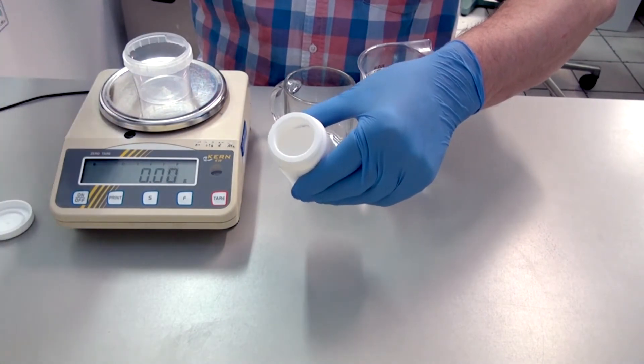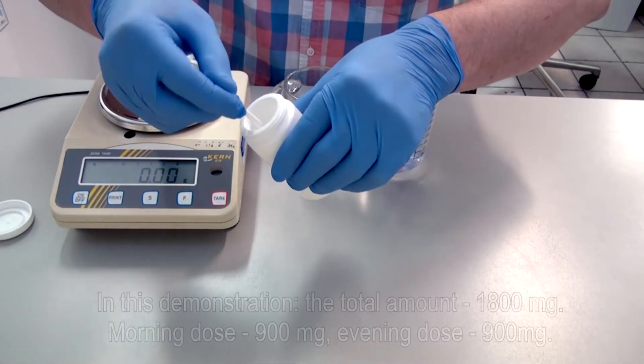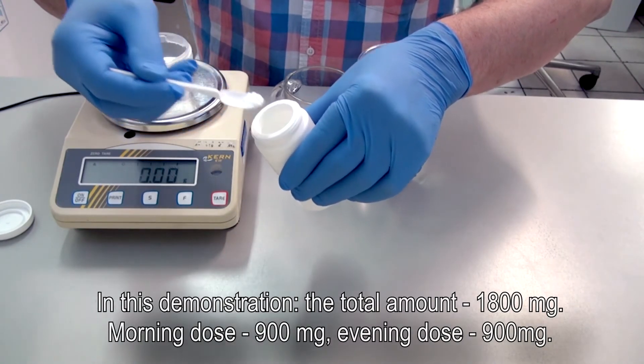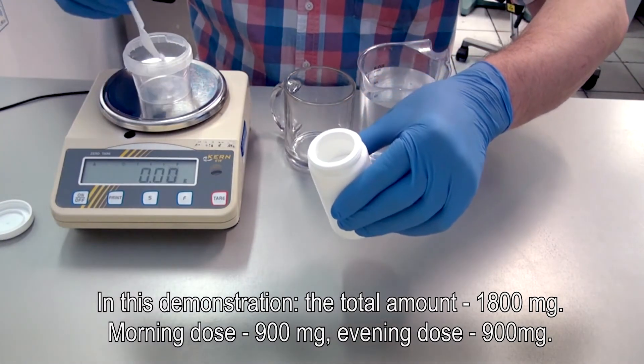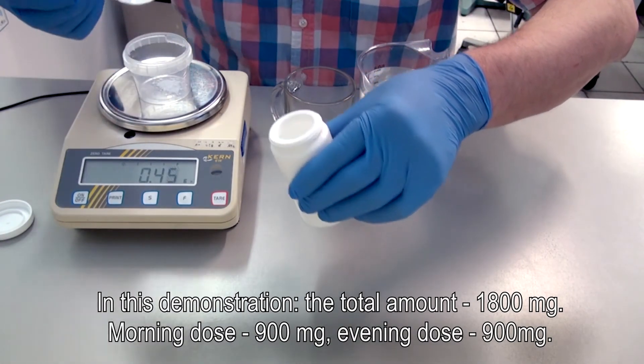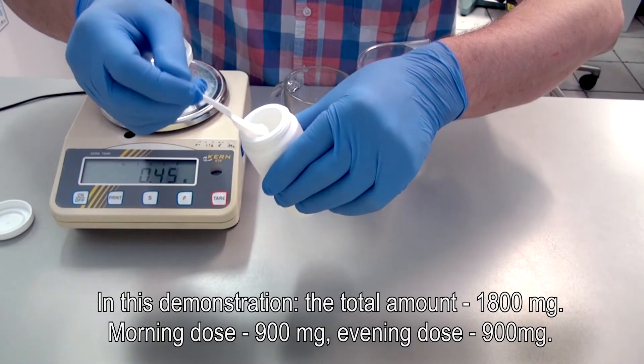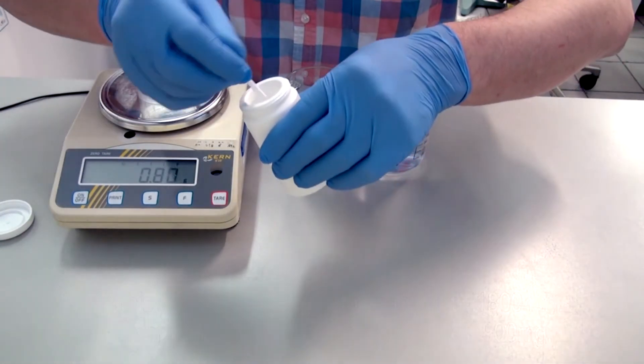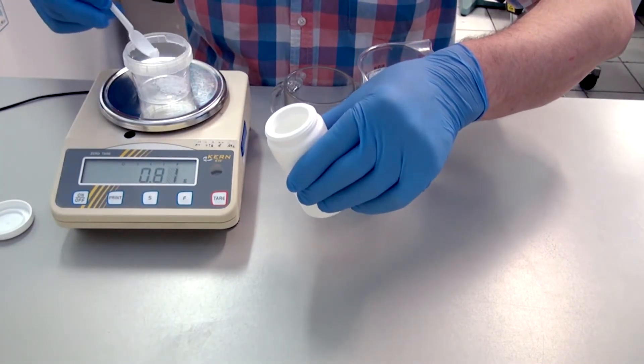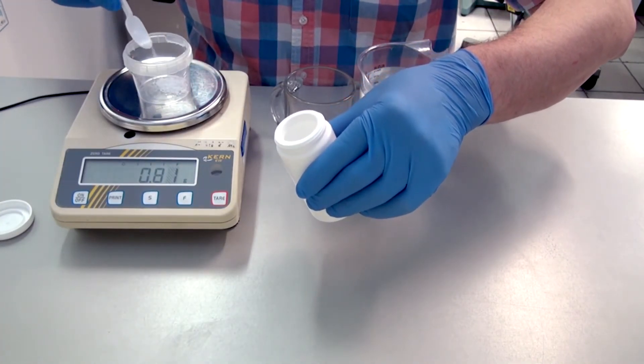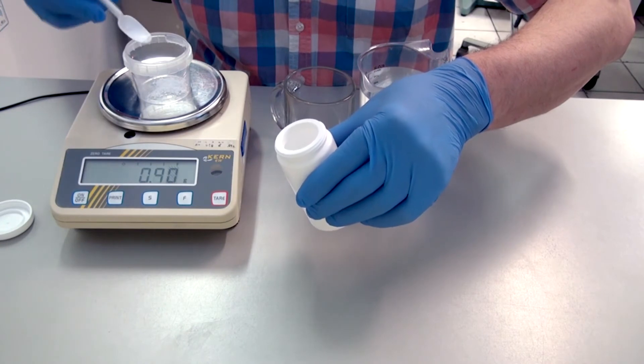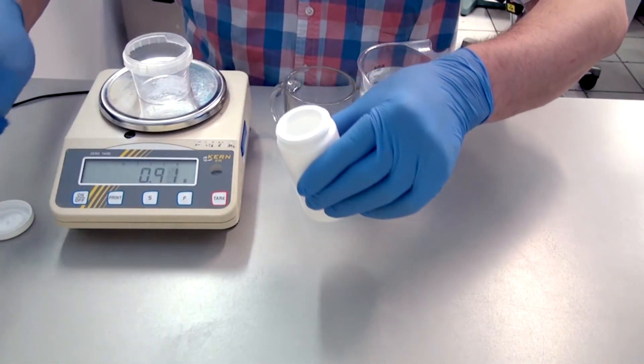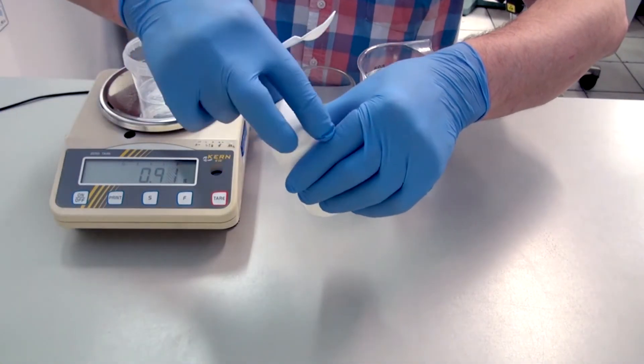Just open the bottle and use the teaspoon to carefully pick the desired dose. We will be making a morning or evening dose for someone who weighs 72 kilograms or 158.7 pounds and that would be 900 milligrams, half of the total daily dose. Don't worry about a little inaccuracies. A couple of milligrams more should not cause any problems.